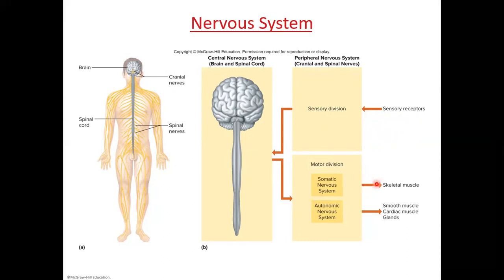The brain then sends a message to the motor division — both somatic and autonomic. The somatic division tells the skeletal muscles of your legs to run. The autonomic nervous system triggers your fight-or-flight response: it tells your digestive organs to stop digesting, speeds up your heart, and signals your adrenal glands to release adrenaline — all to help you survive the lion.